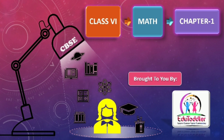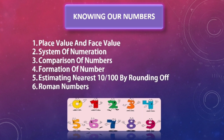Today our topic is 'Knowing Our Numbers' from NCRT Math book of Standard 6. In this chapter we are going to learn about: first, place value and face value of a number; second, system of numeration, which is of two types — Indian system and international system; third, comparison of numbers; fourth, formation of numbers; fifth, estimating the nearest number by using the rounding off method; and sixth, roman numerals.